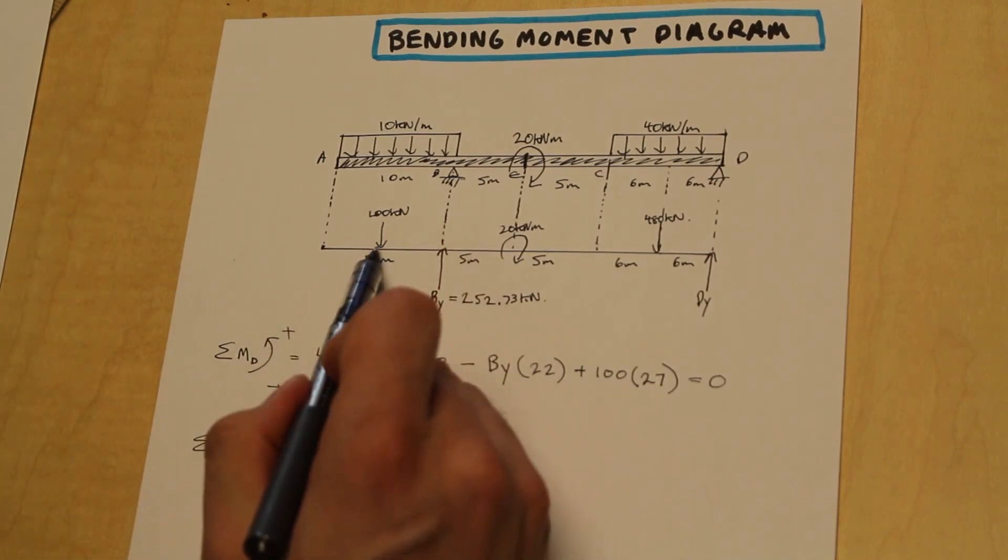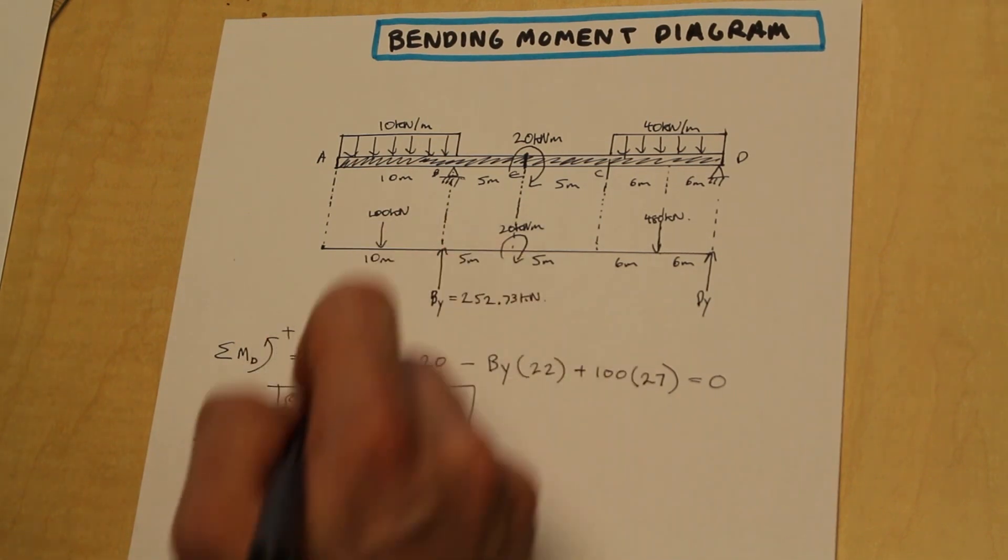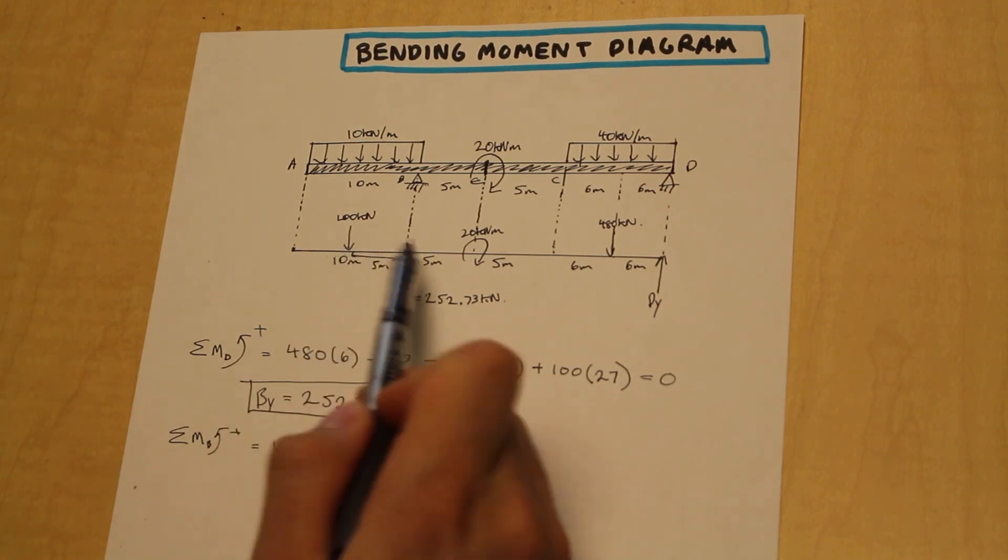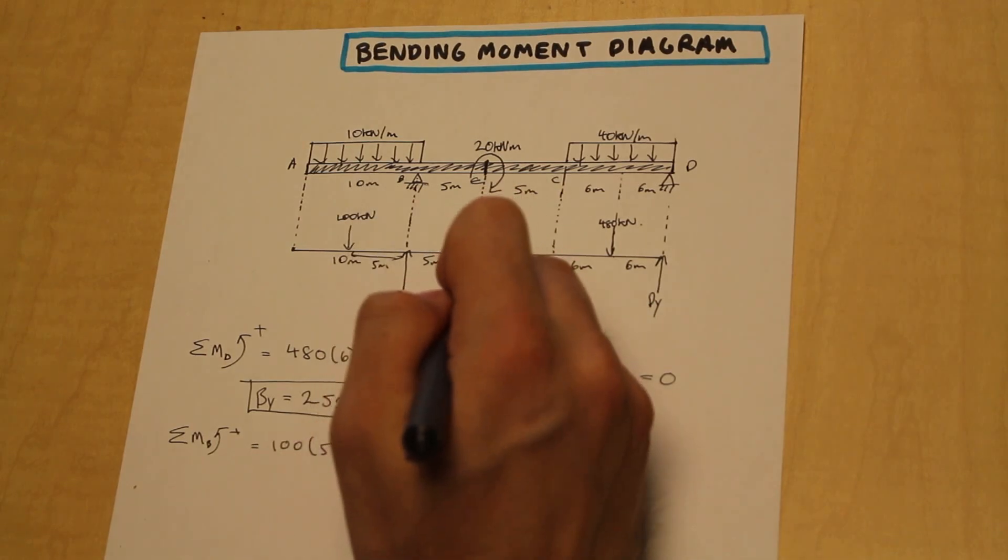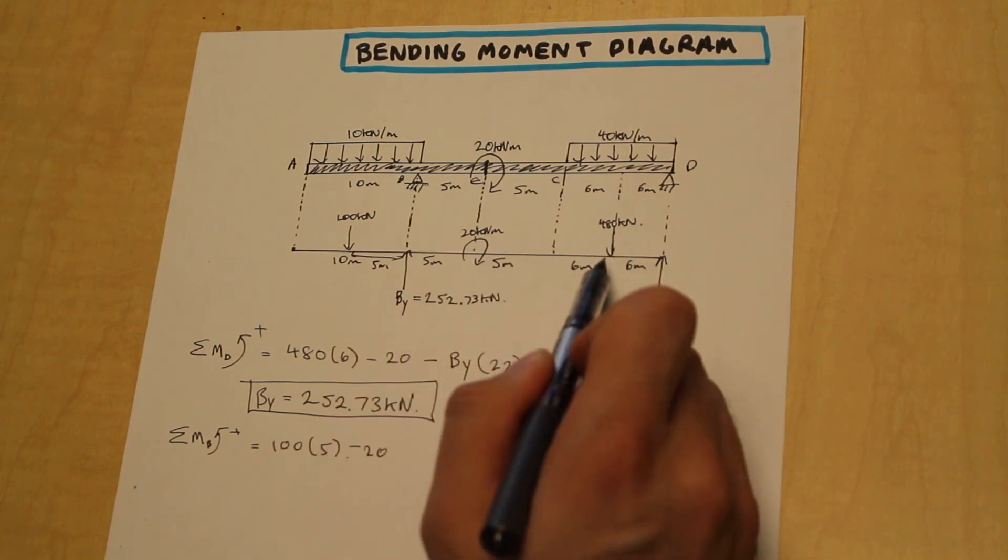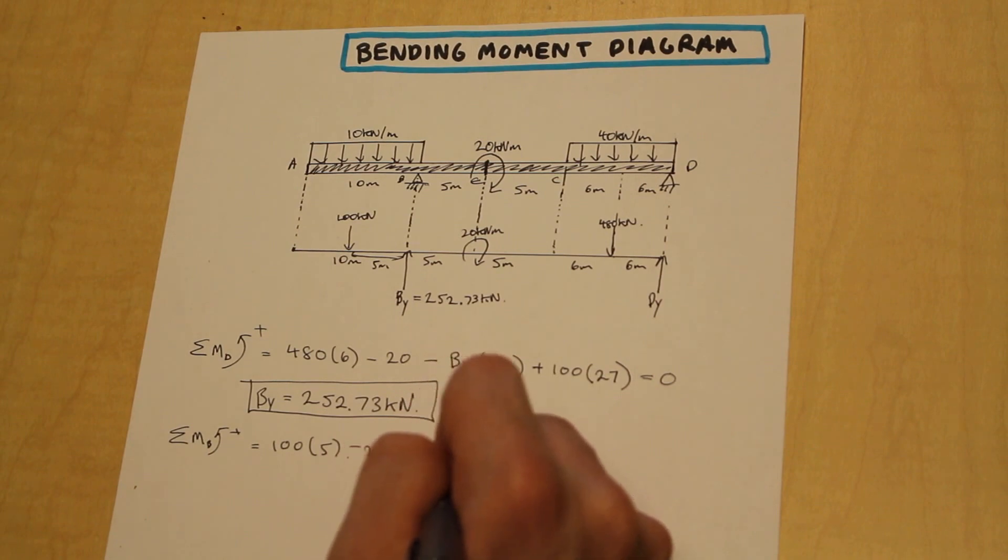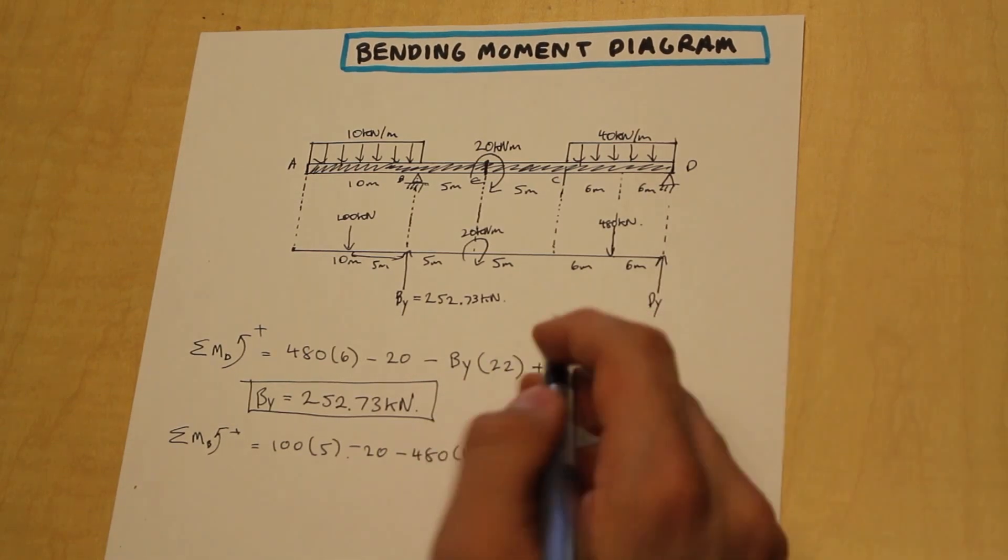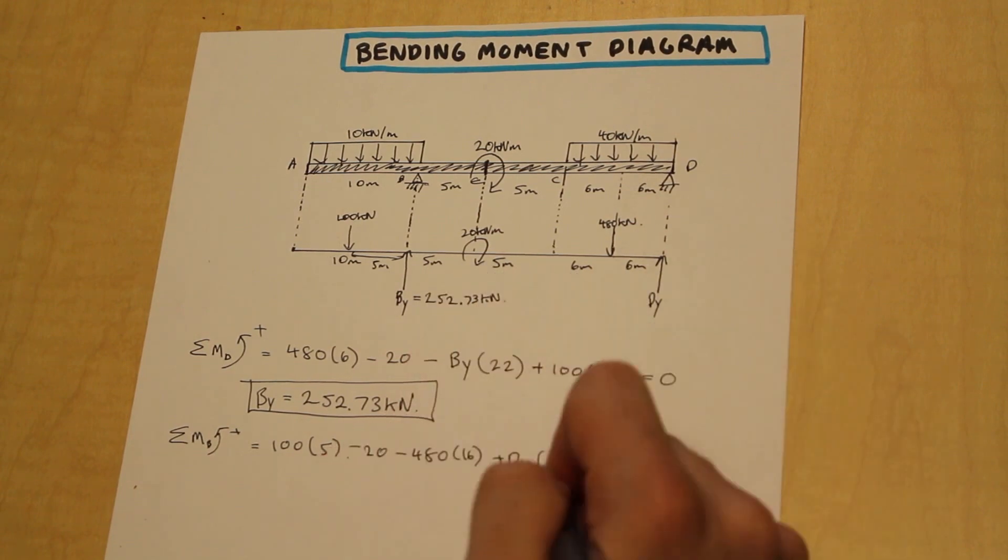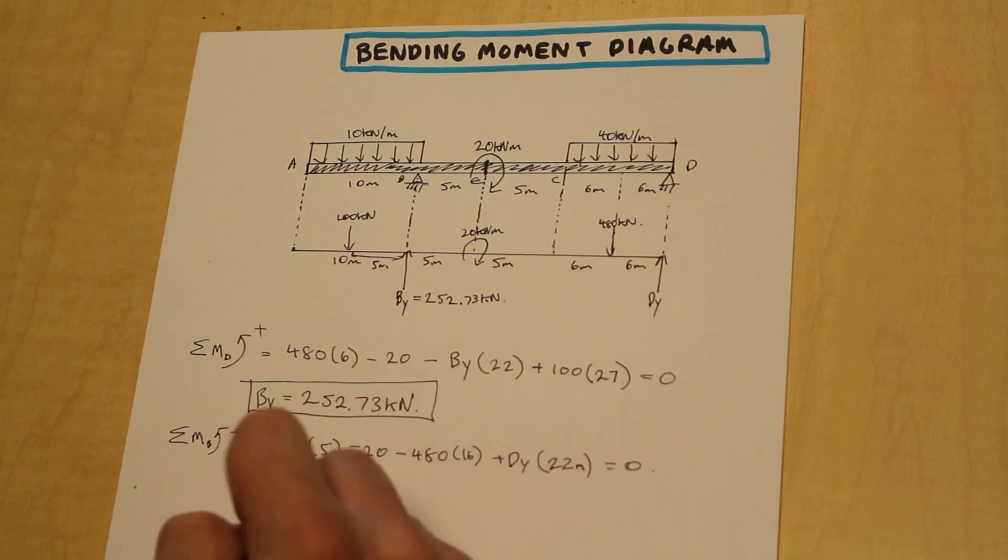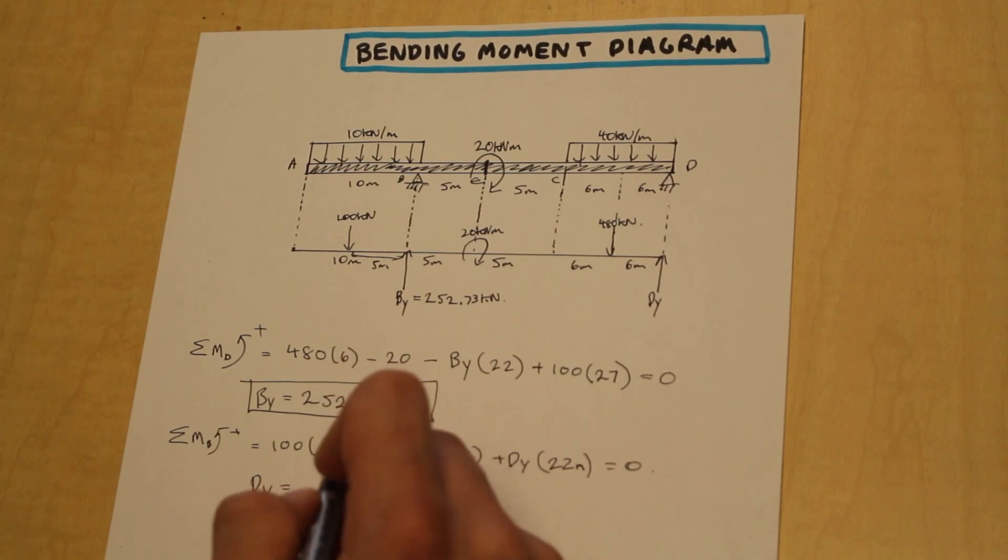We have a positive 100 kN force, that is 5 meters. So we have 100 times 5, this 100 kN concentrated load times the distance 5 from BY. We have, again, the negative 20 kN meter free moment. We have a 480 kN moment, and that's also negative, and that is 16 meters from BY. Finally, we have DY, that's positive, and that is 10 plus 12, which is 22 meters from BY. That's all equal to zero. Solving for DY, we arrive at a value of 327.27 kN.